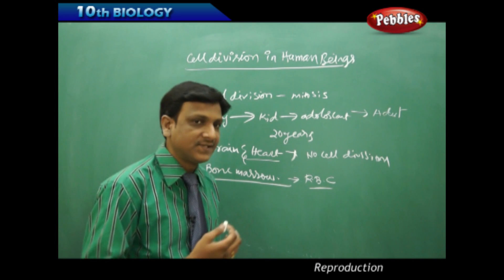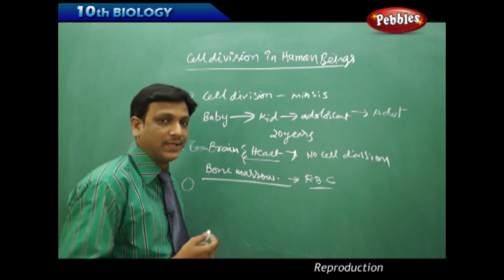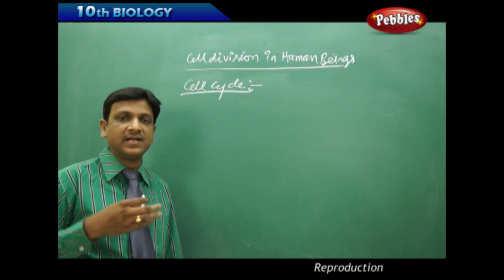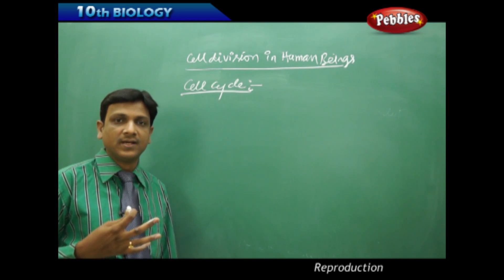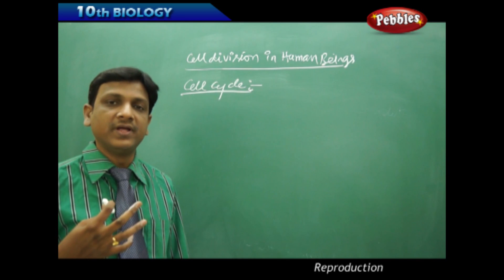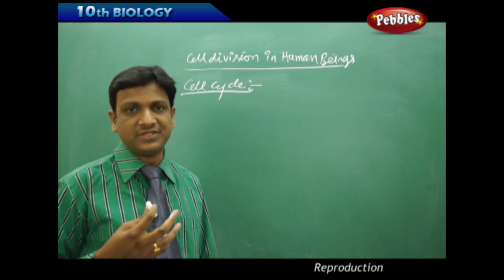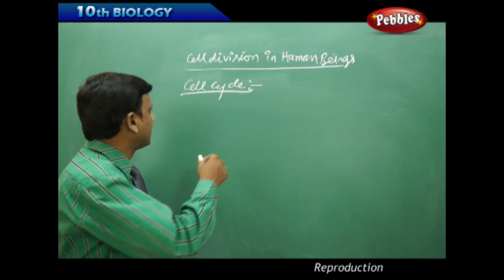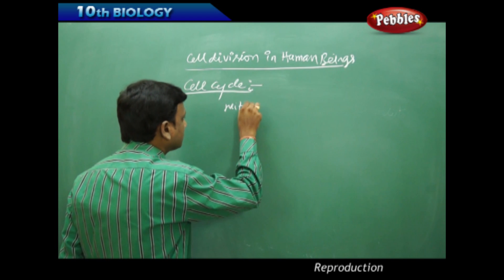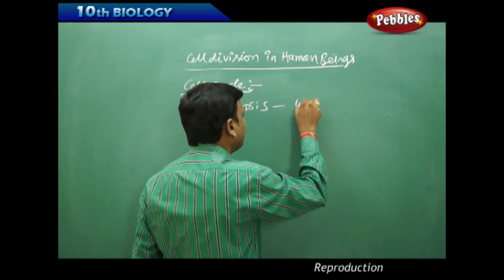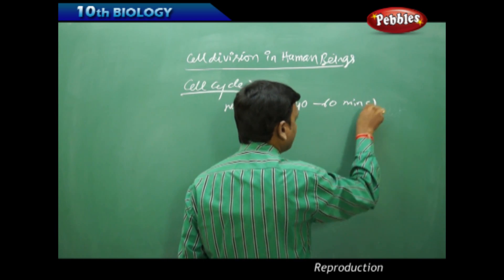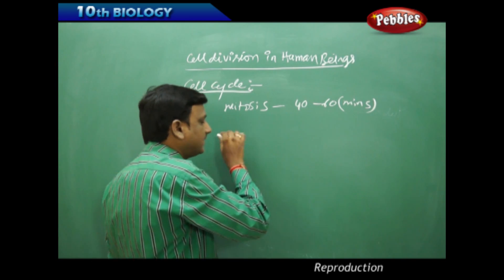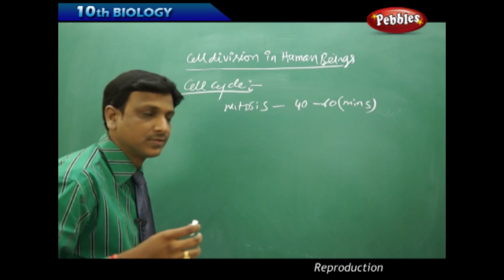Now let us look at the different stages of cell division, starting with mitosis and the cell cycle. Cell division takes place in a cyclic way — the cell copies its genetic material, and then the remaining parts of the cell divide. The mitotic division takes place in nearly 40 to 60 minutes in cases of active cell division. Between two cell divisions, there is a gap called the interphase — the phase between two cell divisions.